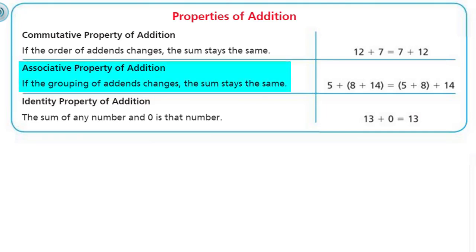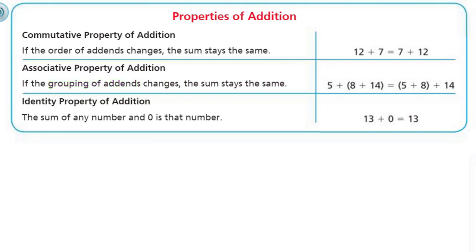Next, we have the associative property of addition. It states: if the grouping of addends changes, the sum stays the same. Grouping is the key word. In our example, we have 5 plus the sum of 8 and 14 in parentheses, which equals the sum of 5 and 8, plus 14. They grouped the 8 and 14 together first, then grouped the 5 and 8 together. The sum stays the same — the associative property of addition has you covered.